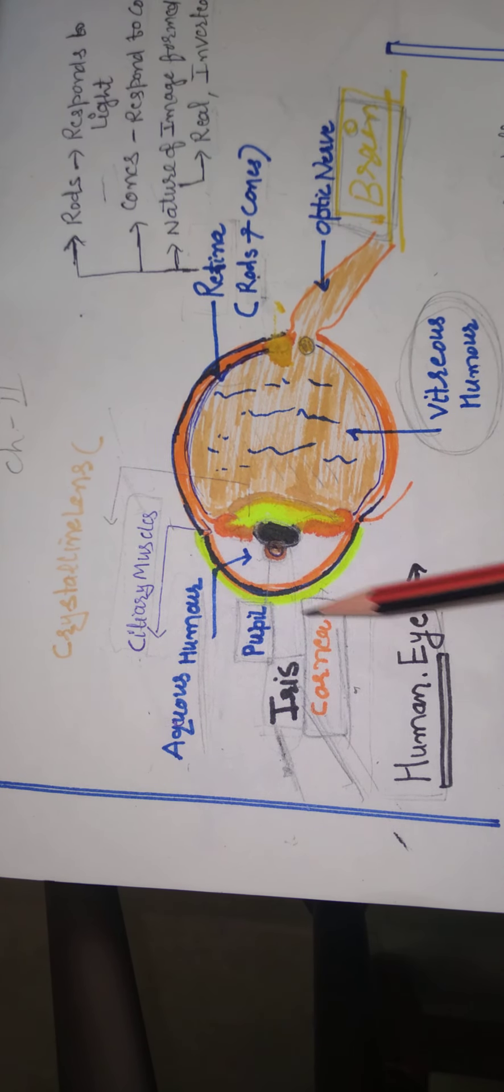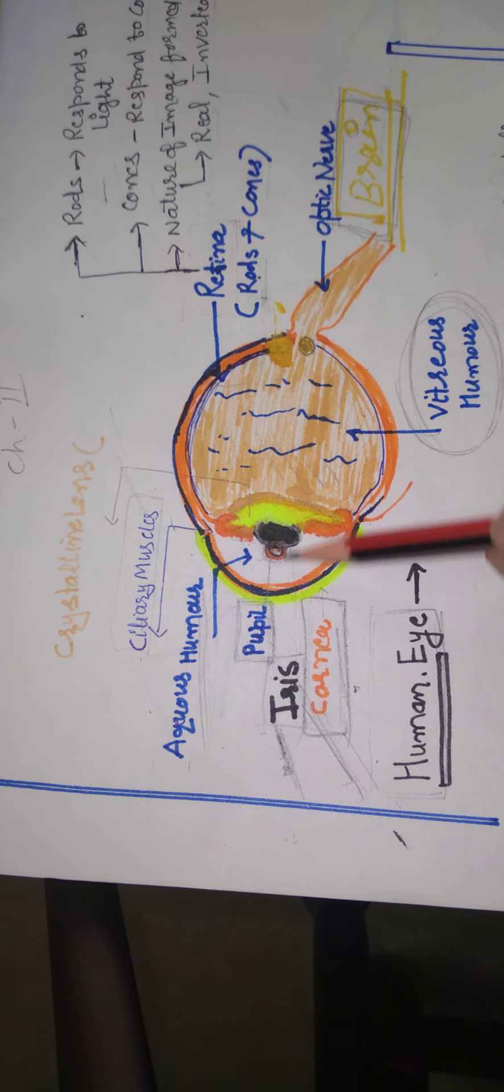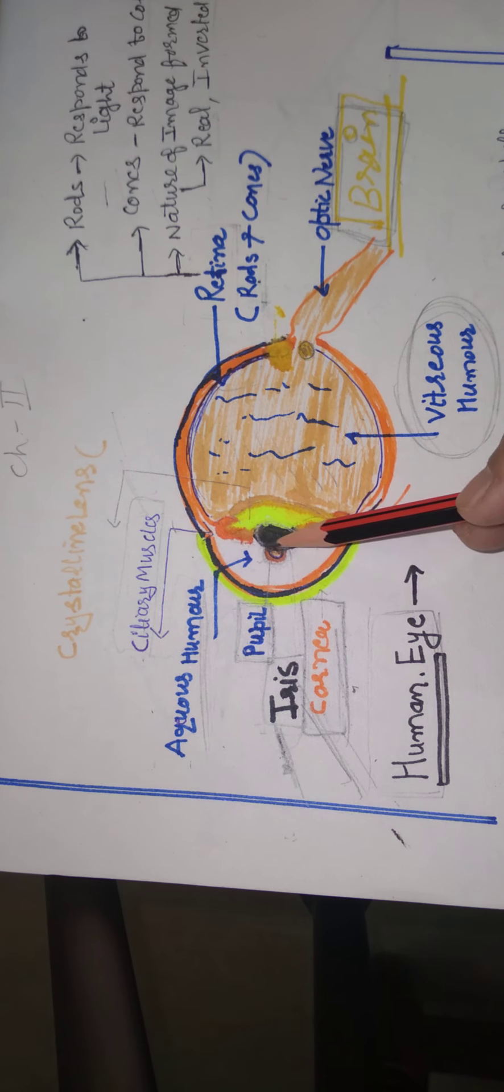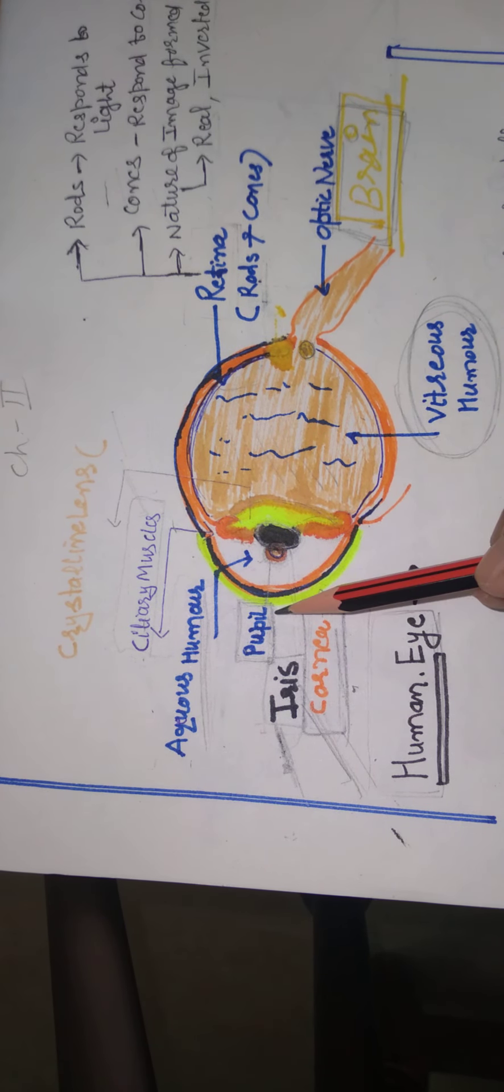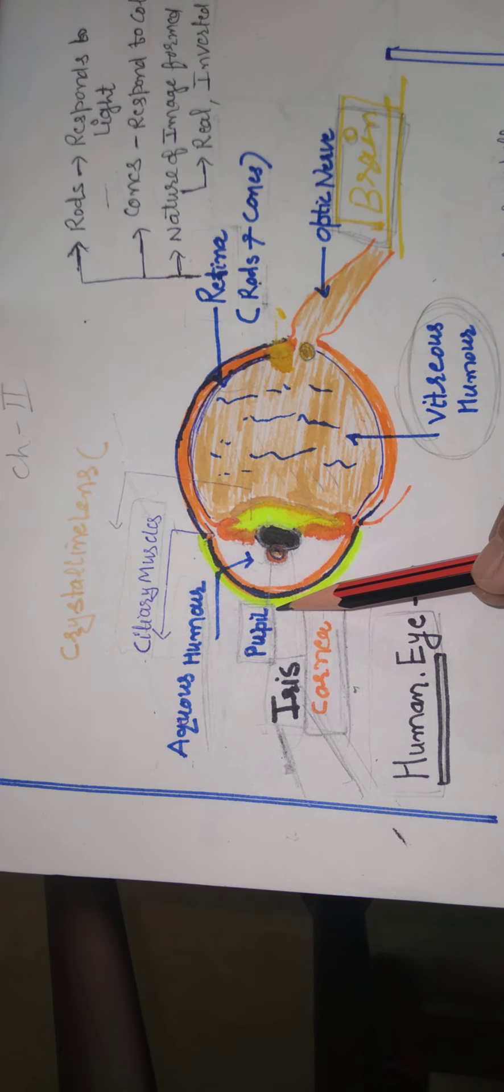The second one, pupil. Cornea के बाद second है pupil. Pupil is a small opening in the dark circular frame which is called iris. Pupil regulates the amount of light entering the eye.